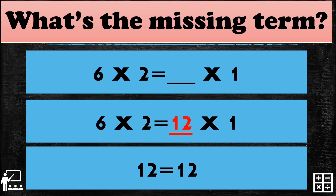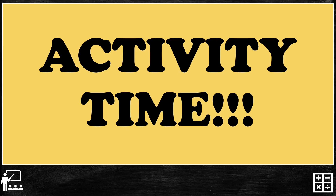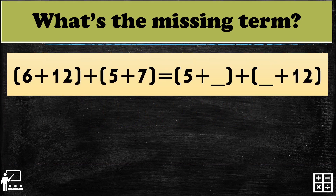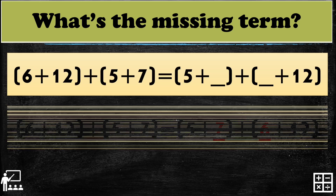It's activity time! I'll give you 5 examples — give me the missing term. You may use a calculator to check if both sides are equal. My first equation is 6 plus 12 plus 5 plus 7 equals 5 plus blank plus blank plus 12. What are the 2 missing terms in this equation? That's right — it's 7 and 6. Great job!